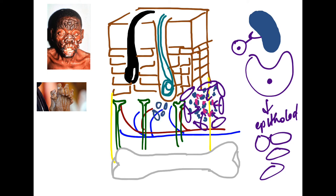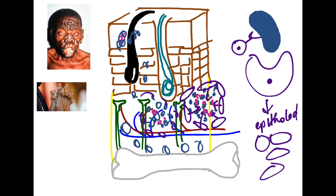It happens all over, so we have granulomas throughout the skin with caseating necrosis. Eventually, all those granulomas will destroy the skin and elevate it. They will start to elevate the skin, and our skin will become nodulated, just like this.